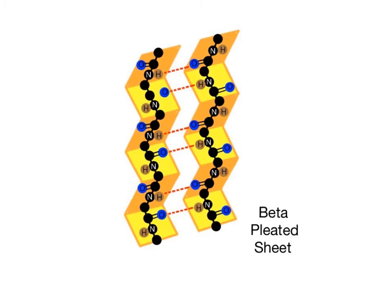A beta pleated sheet resembles a folded chain-linked fence. In this secondary structure, the individual protein chains are folded and joined together by hydrogen bonds, shown by the red broken lines, to form a tough sheet.